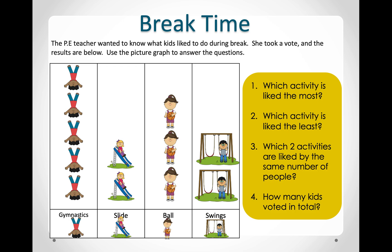Which activity is liked the most? Here we can see they've done gymnastics, they've gone on the slide, they play with the ball, or they go on the swings. Which one do the most kids like to do? We can look at which one has the most number of kids and count: 1, 2, 3, 4, 5. So if you guessed that most people like to do gymnastics, you are correct. Well done.